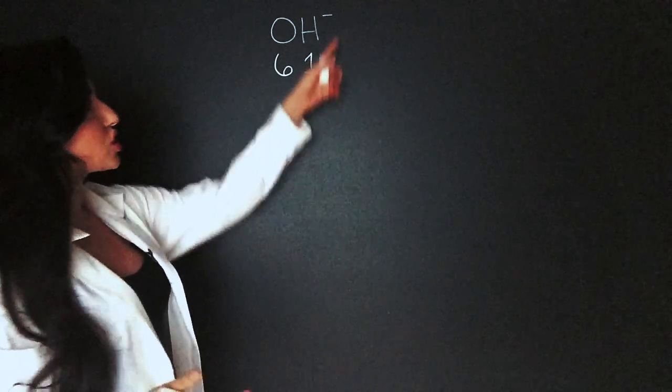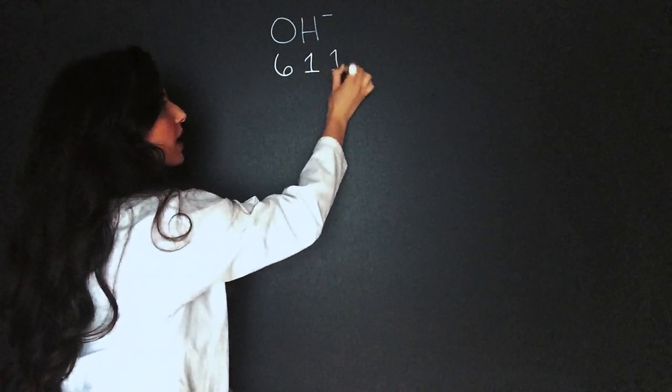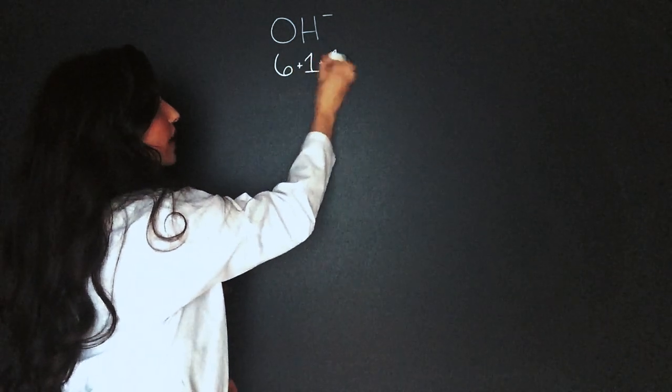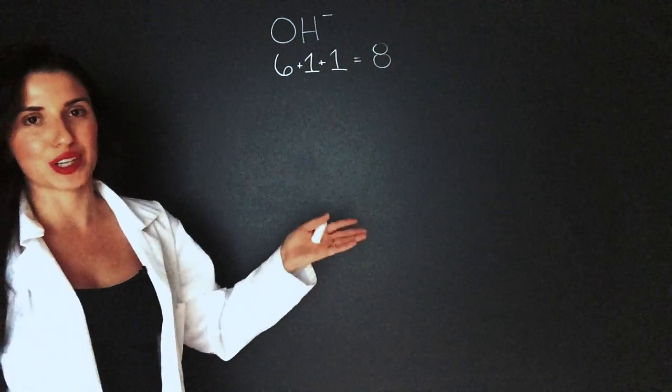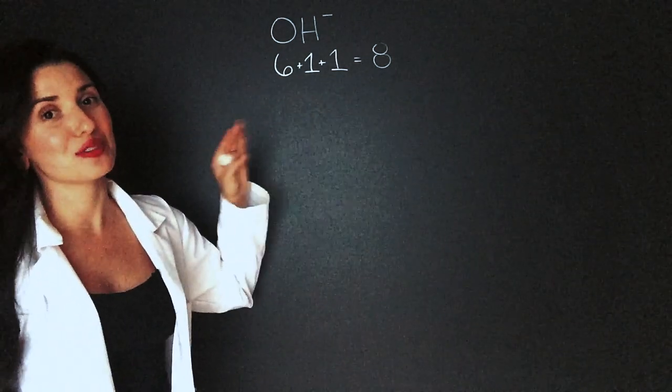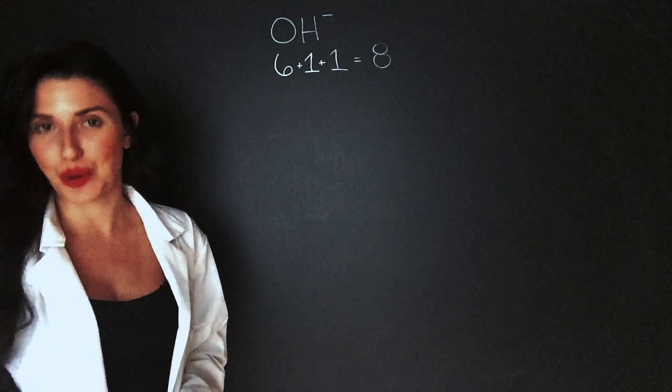Oxygen is supposed to have six and hydrogen should have one. Then I look at the charge. One negative charge means it will add one electron. I add these all together and that equals eight electrons in my Lewis structure. This is pretty much foolproof, as long as you know the valence electrons that each element is supposed to have.